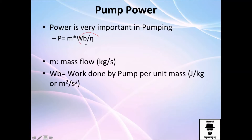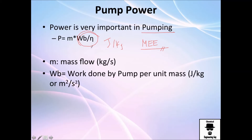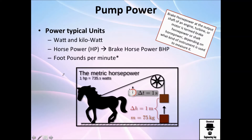To get the pump power, you need to know the head of the pumping requirements — that is, how many joules per kilogram — obtained from the mechanical energy equation. You also need the efficiency and the mass flow. Typical power units are the watt or kilowatt, which are joules per second or kilojoules per second.